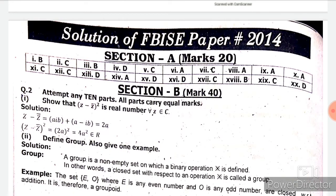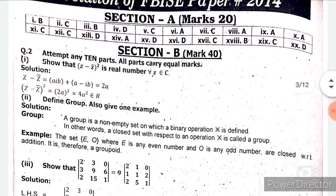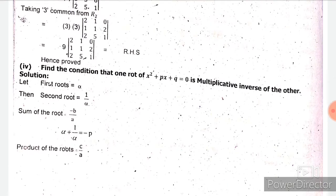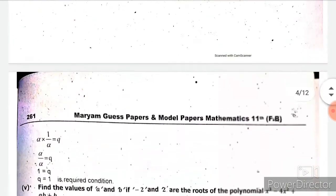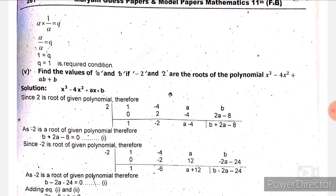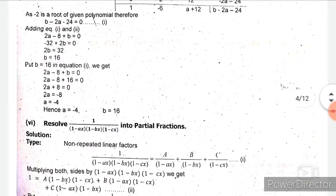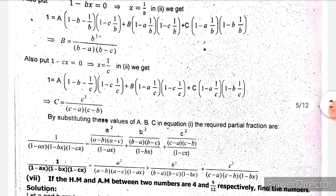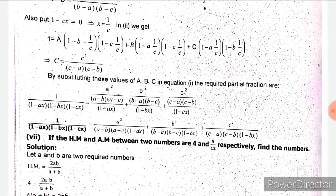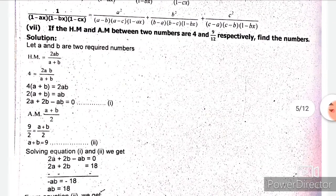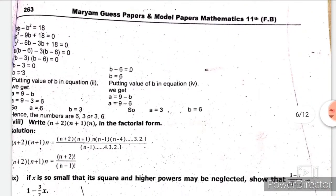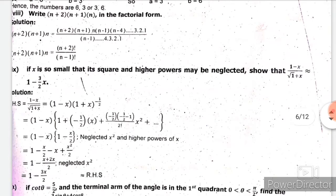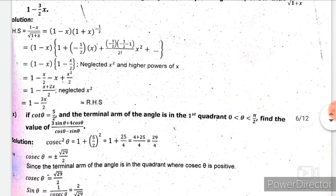Here is the solution of section A and section B. Question number two: we have to attempt 10 out of 14. Part 1 is from chapter 1, part 2 is from chapter 2, part 3 is from chapter 3, part 4 is from chapter 4, part 5 is from chapter 4, part 6 is from chapter 6, part 8 is from chapter 7, part 9 is from chapter 8, part 10 is from chapter 9.